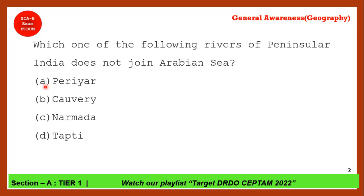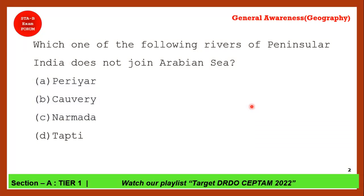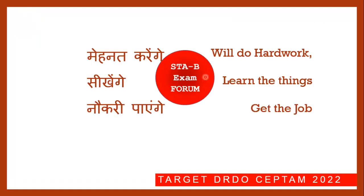Next question: Which of the following rivers of Peninsular India does not join the Arabian Sea? The correct answer is option B — Kaveri. Kaveri flows from west to east and falls into the Bay of Bengal. Tapti, Narmada, and Periyar all flow from east to west and fall into the Arabian Sea.